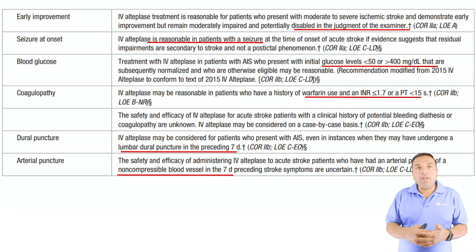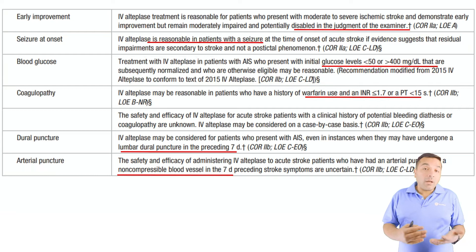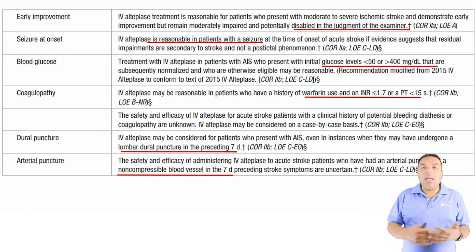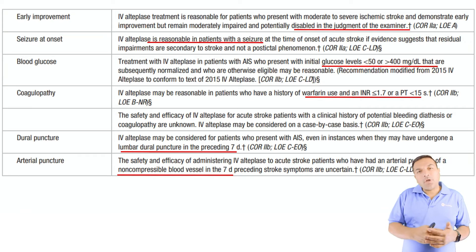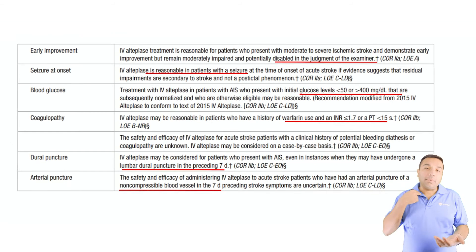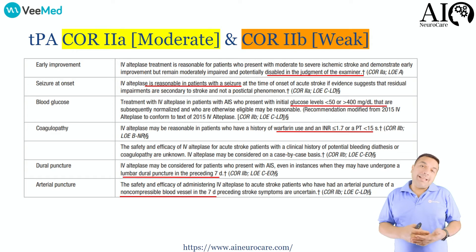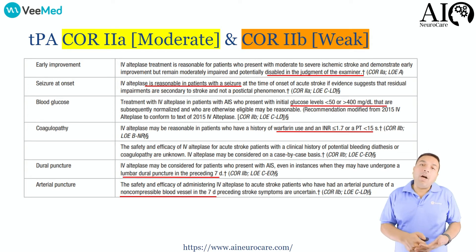For patients who had a recent dural or lumbar puncture within the past seven days, go ahead and give TPA — this is not a contraindication. Similarly, for patients with an arterial puncture within the last seven days at a non-compressible site such as the subclavian, consider giving TPA. Both carry a weaker recommendation of class 2b.